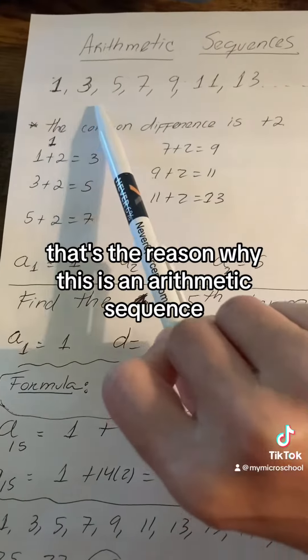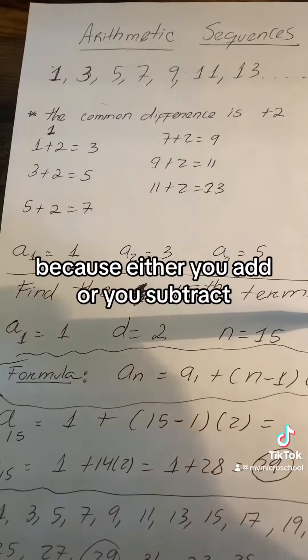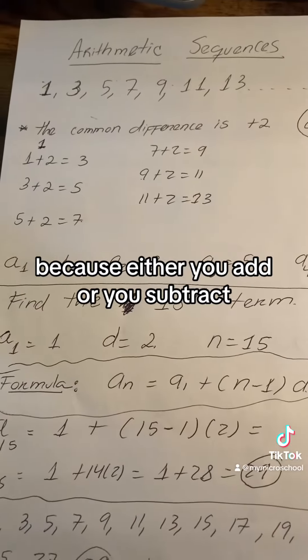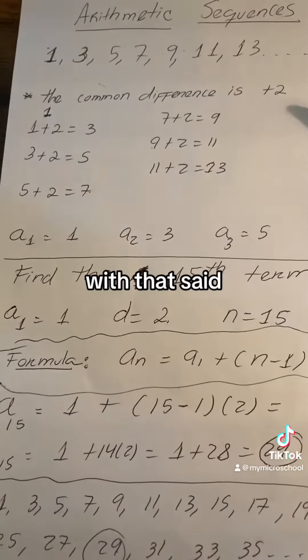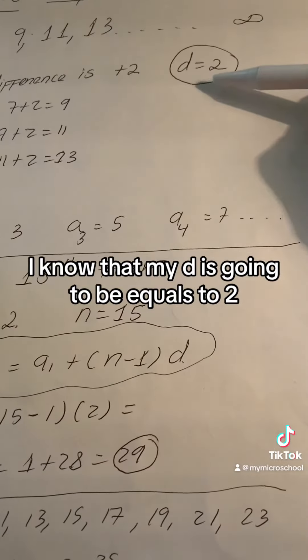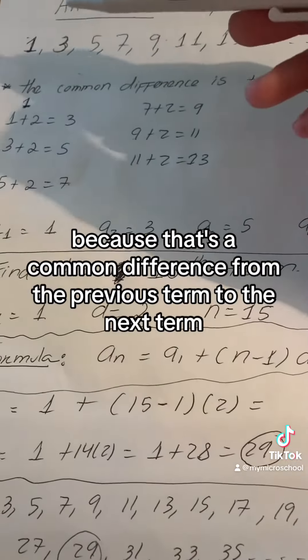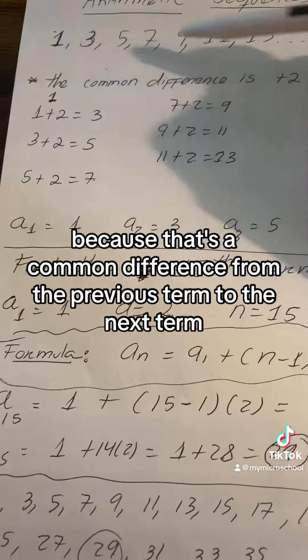That's the reason why this is an arithmetic sequence because either you add or you subtract. You're going to see that in the geometric ones we're going to either multiply or divide. With that said, I know that my d is going to equal 2 because that's the common difference from the previous term to the next term.